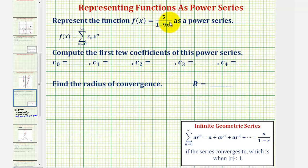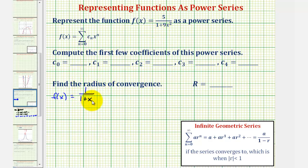We'll notice how the given function somewhat resembles the formula used to find the infinite sum of a converging geometric series, but it doesn't fit perfectly, so we'll have to build the power series from what we know about a more basic function. For example, if we had f(x) = 1/(1+x), we can write this as 1/(1 − (−x)), so a = 1 and the common ratio r = −x.